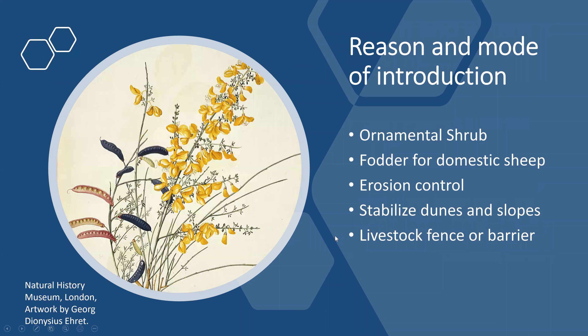The reasons and modes of introduction were as an ornamental shrub — it's very beautiful — as fodder or food for sheep, for erosion control, stabilizing dunes and slopes, and as a livestock fence or barrier.